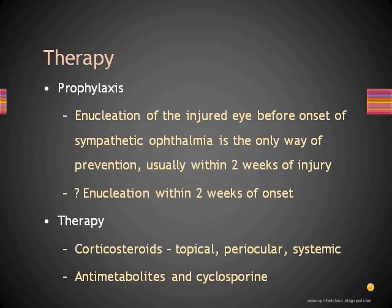The only known way to prevent sympathetic ophthalmitis in the fellow eye is removal of the injured eye within two weeks of injury. Therefore, all eyes with severe damage and no chance of vision recovery following penetrating trauma should be considered for enucleation to prevent sympathetic ophthalmitis. Enucleation — and not evisceration — is the prophylaxis for sympathetic ophthalmia, and must be done within two weeks of injury. Enucleation of the exciting eye two weeks after onset of sympathetic ophthalmia may also modify the course in the sympathizing eye, though this is usually not done because it is unclear which of the two eyes may retain better vision.